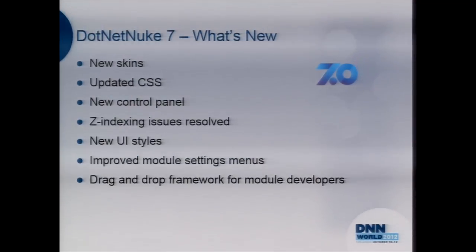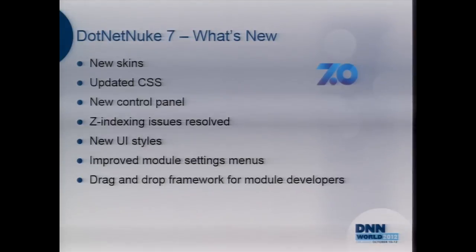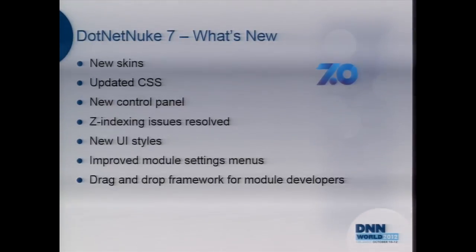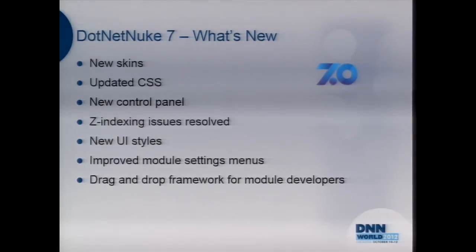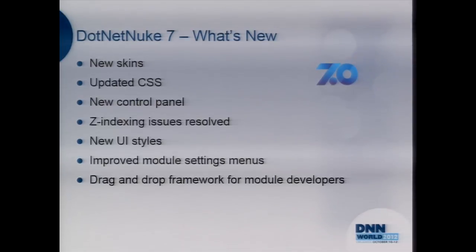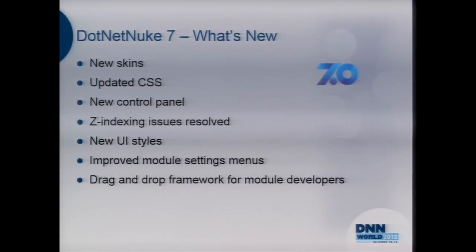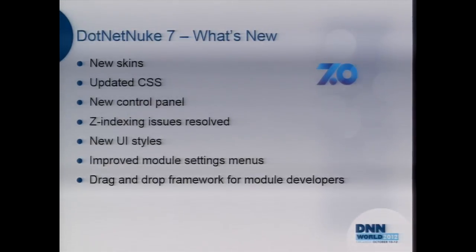What we're talking about today is designing for DNN. There are a lot of nice changes for DNN 7: we've got new skins, there's an updated CSS, there's a new control panel, and the Z-indexing — how many of you have skinned with DNN 6 and noticed the Z-indexing issues? They've resolved that, so it should be much more enjoyable. There are also new UI styles, an improved module settings menu, and the drag-and-drop framework is now included in the core.